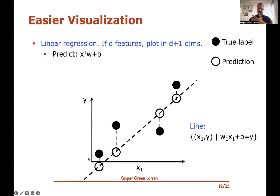The prediction is just the last coordinate on the hyperplane. If you want to predict the label of a point, you go vertically down until you hit the hyperplane, and the y-coordinate there is your prediction. Of course, this is not necessarily the true label — the true label in this plot would be the y-coordinate of the black point up above. So the mistake is really the difference between that y-coordinate and the position on the hyperplane. This is how we make predictions in d+1 dimensions, where the last coordinate is the predicted label.